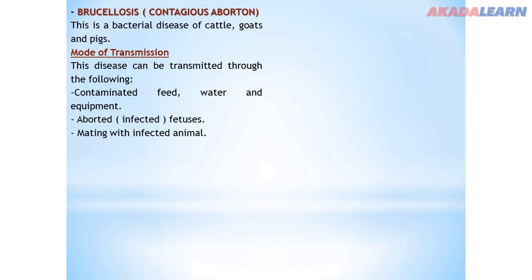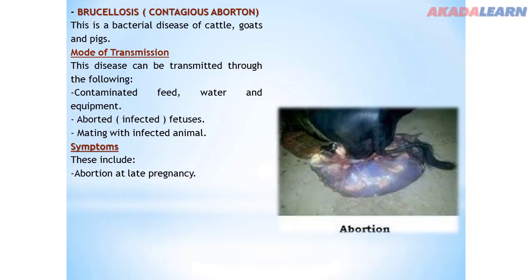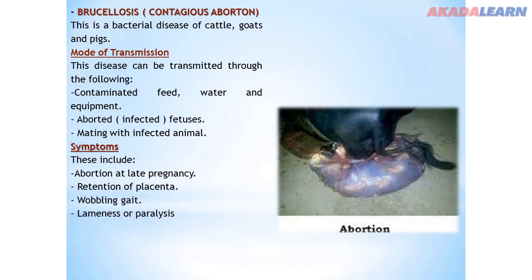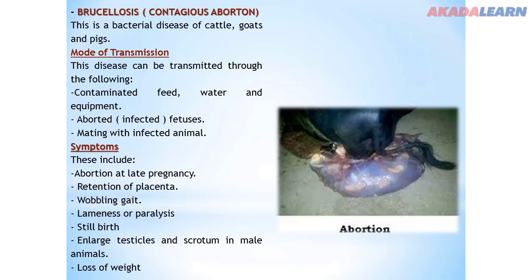Symptoms of brucellosis: abortion at late pregnancy — the female animal may abort the fetus at late pregnancy; retention of placenta after birth; wobbling gait, lameness or paralysis; stillbirth — where the animal gives birth to a dead fetus; and enlarged testicles and scrotum in male animals. Both male and female animals can also experience loss of weight.